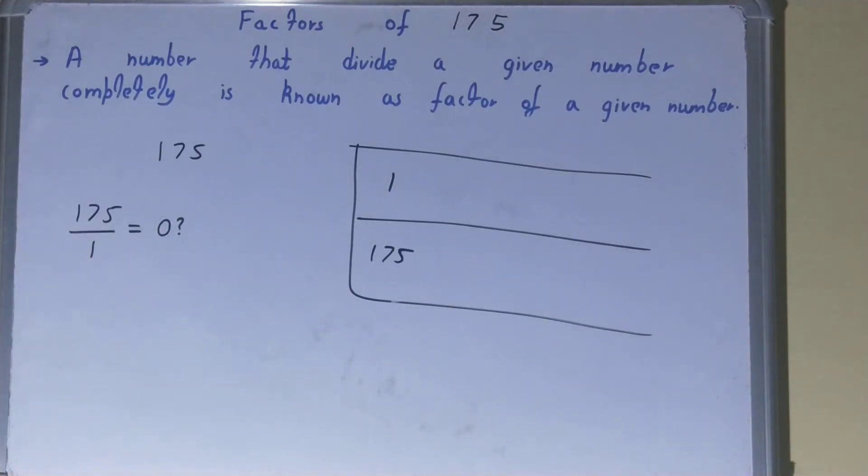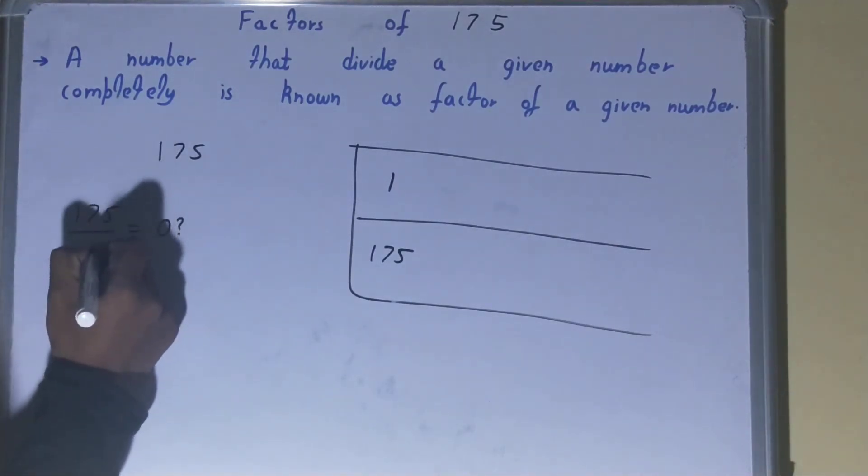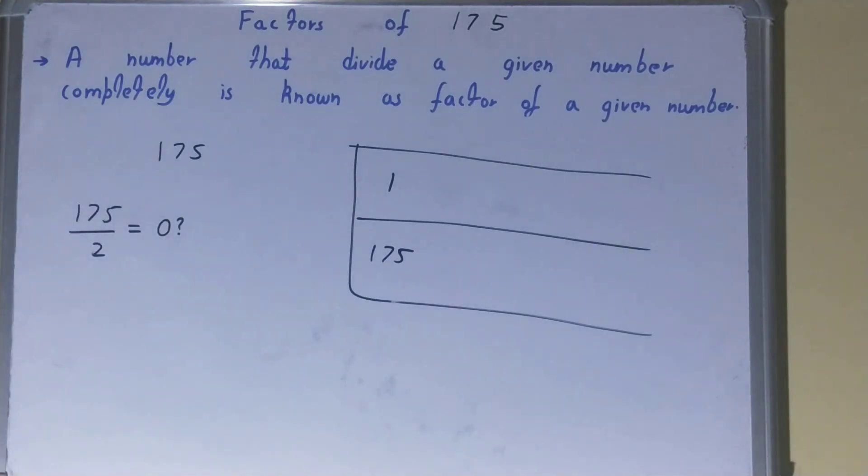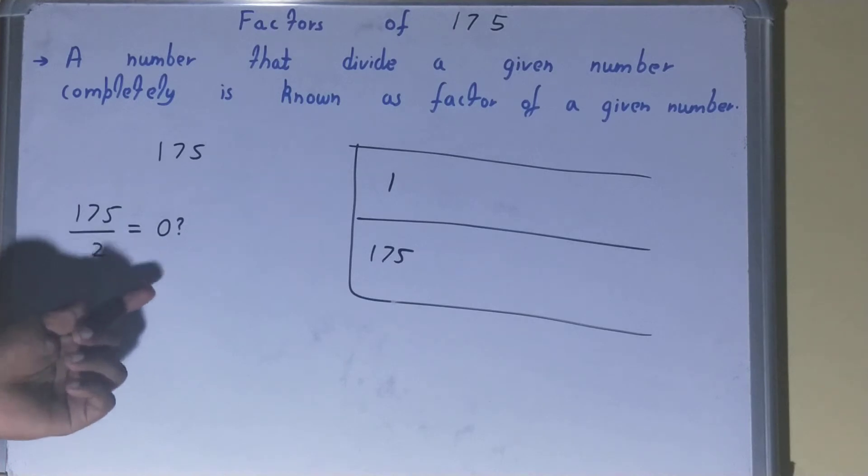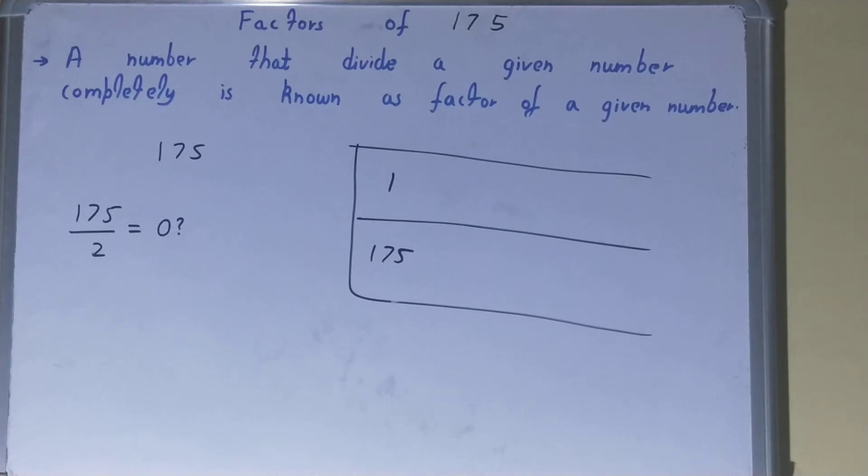Okay, after 1 comes 2. Now one thing you need to see very carefully, this is for your concept: whenever you spot an odd number in the numerator, like 175 is an odd number, then you don't need to check with the even number in the denominator. Just ignore it. Odd numbers cannot be divided by even numbers completely. So whether you get 2, 4, 6, 8 and so on, all the even numbers, just ignore them.